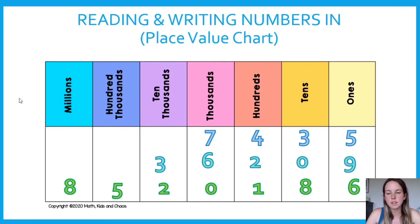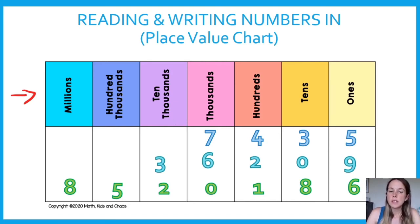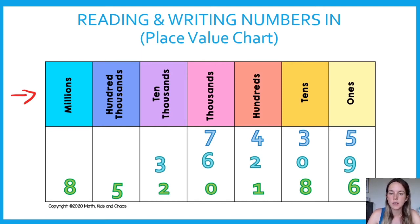We read from the left-hand side. My first number is 7 435. My next number is 36 209. The last number is 8 520 186. You need to be able to read numbers like that correctly. So remember this place value chart — if it makes it easier for you to read and write numbers, you can take this down.